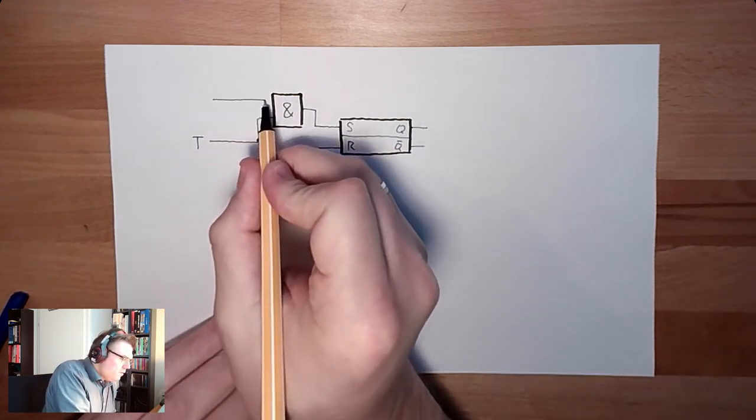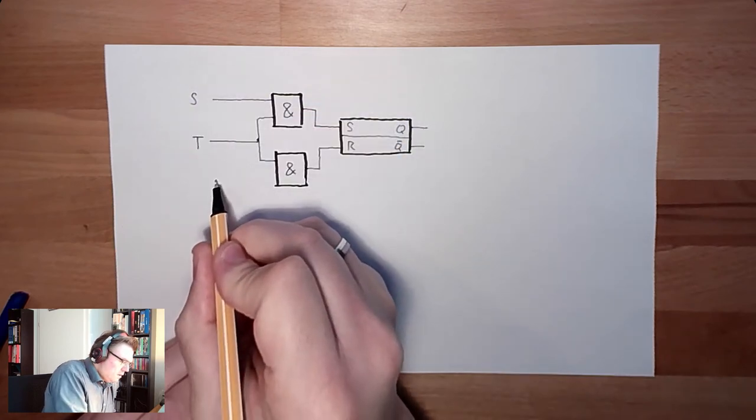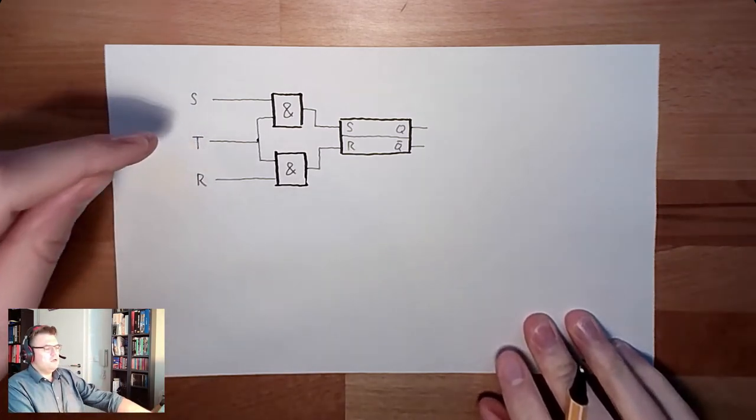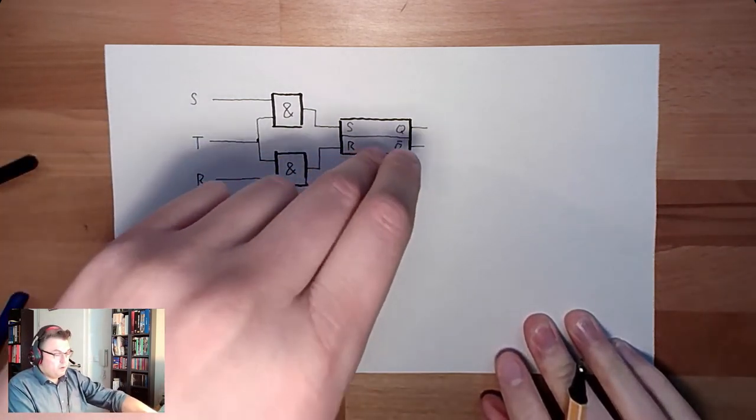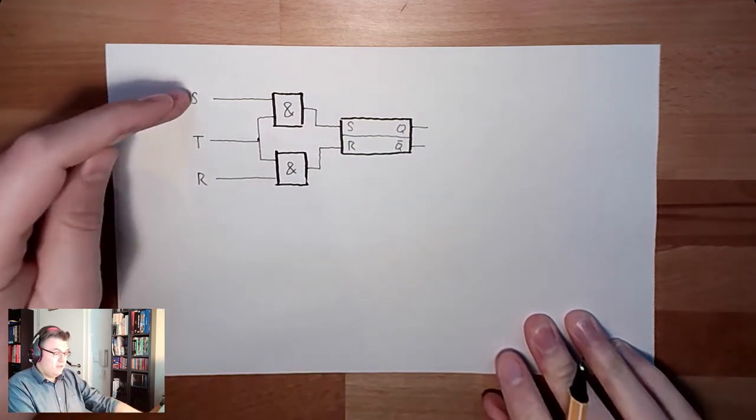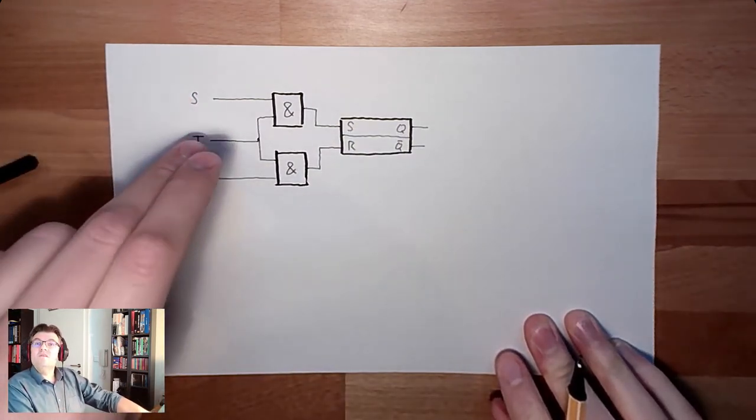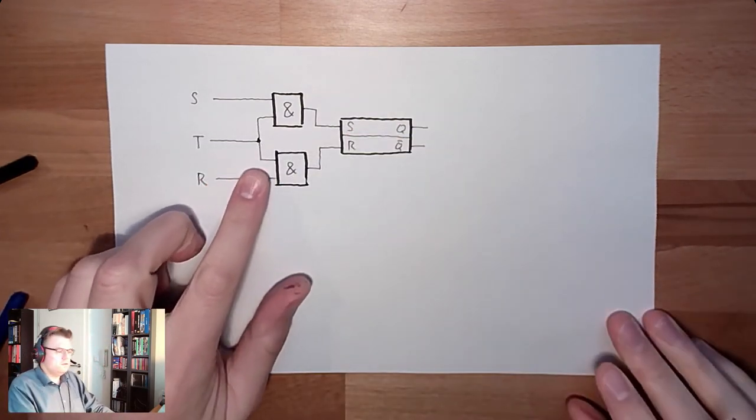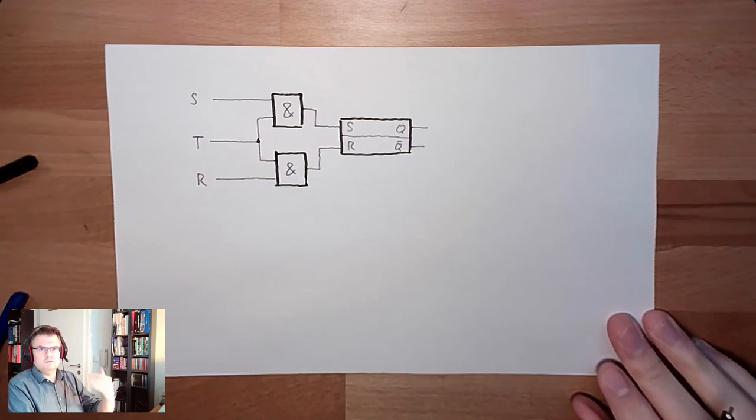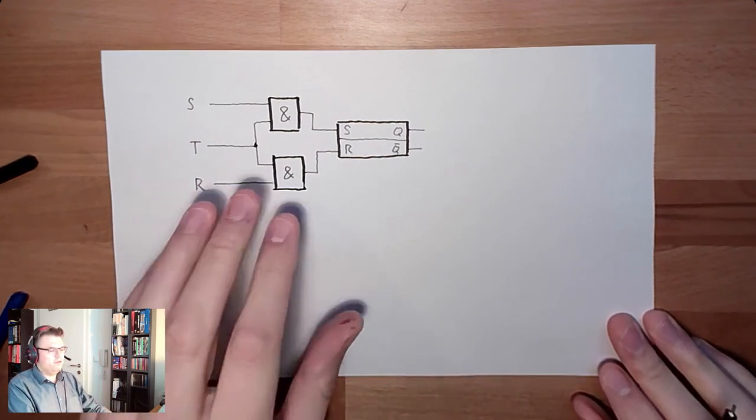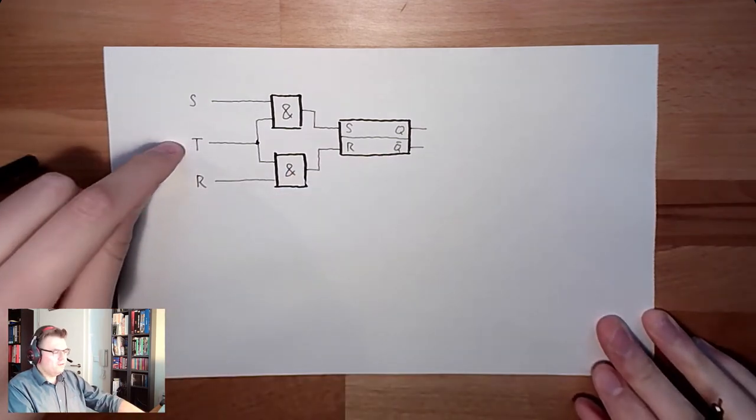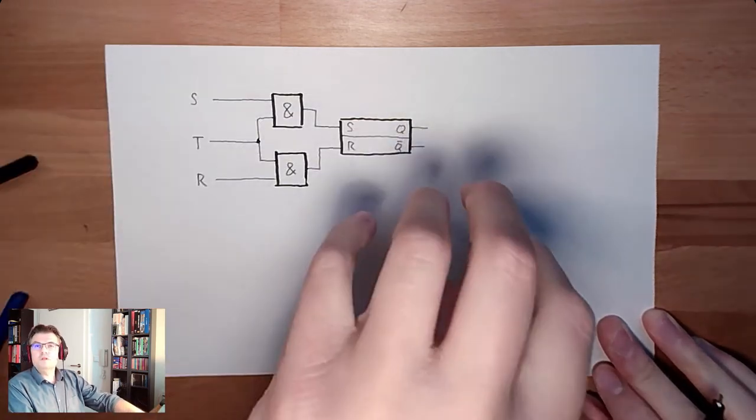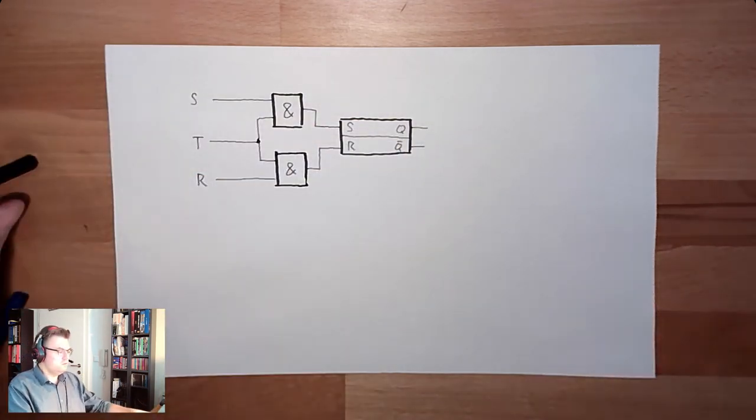Here we do have set and reset line. This means that the latch here can only be set or reset if trigger is at level one. This is a static input here. So this is a level triggered latch. Until T is 1, S and R can even change and the changes will be taken into the memory.